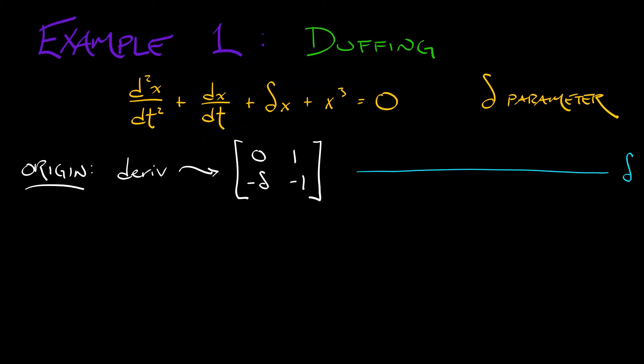The trace is negative one, the determinant is delta. That means that if we have delta at zero there's something funny going on. When delta is less than zero I have a saddle. When delta is bigger than zero I have a sink. And when delta is bigger than one fourth I have a spiral sink.